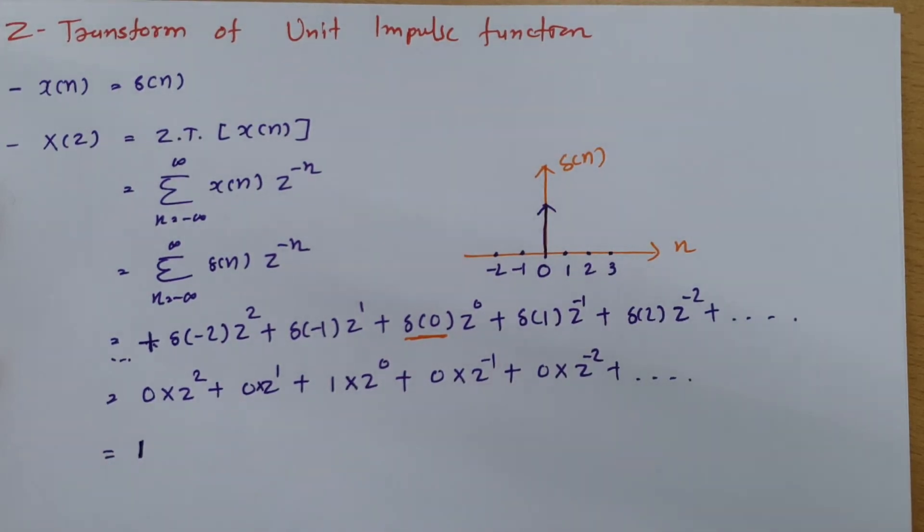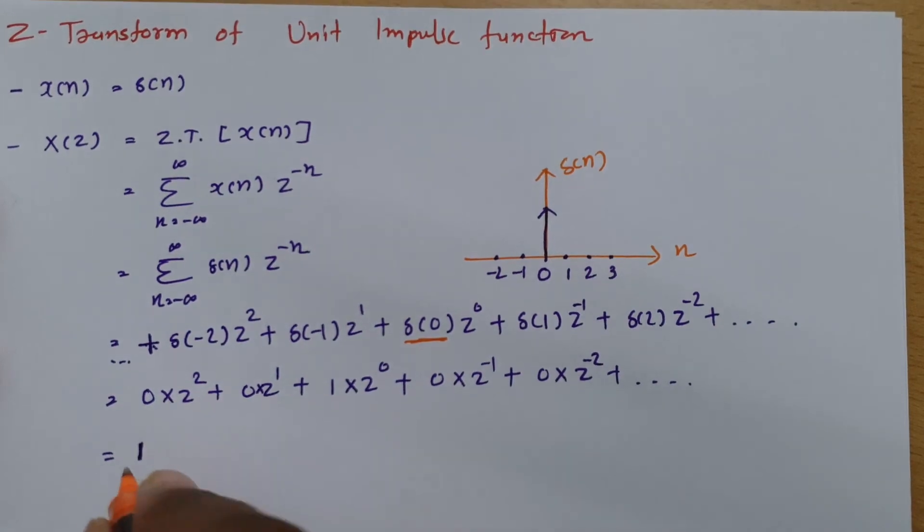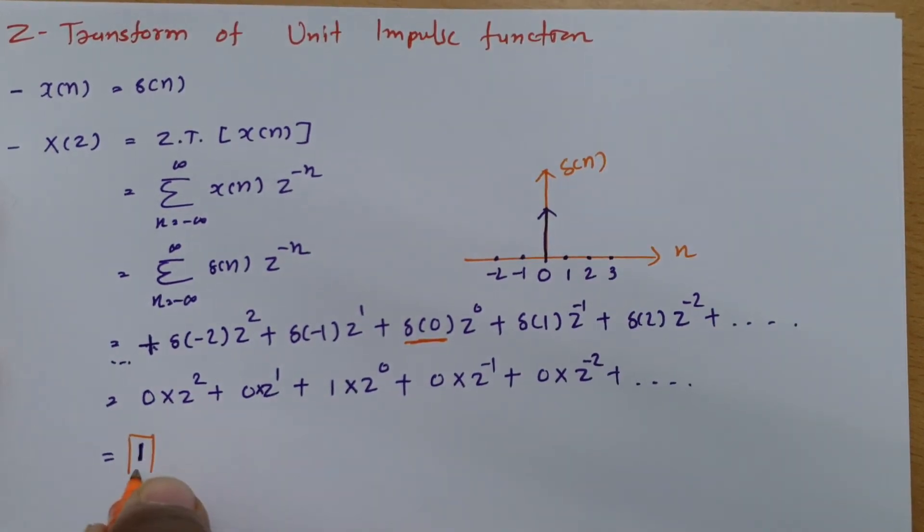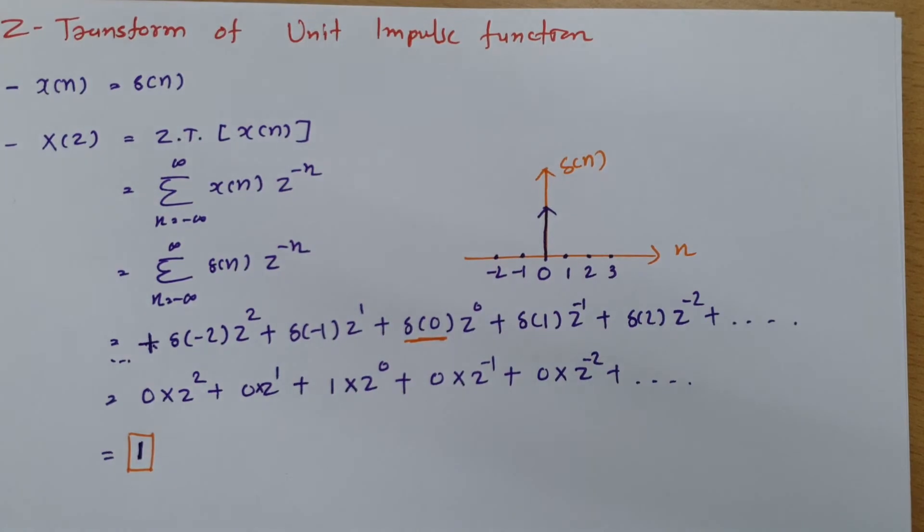So the Z-transform of the unit impulse function is unity; it is 1.